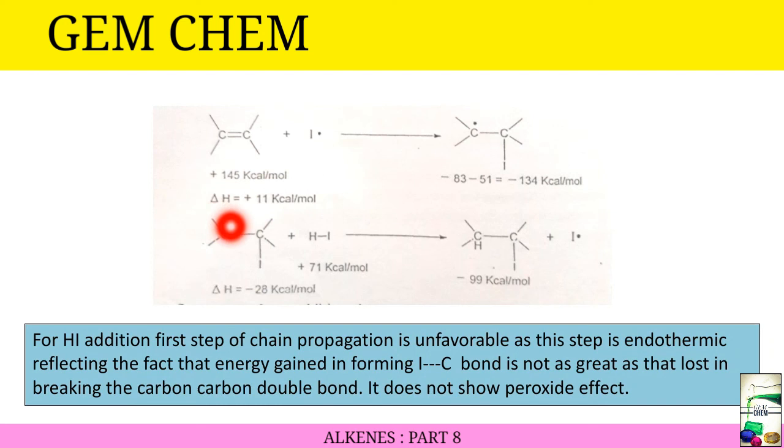Whereas the last case for HI, we see that the first step has a positive delta H, which means it is endothermic. Thus it reflects that the energy gained in forming the I-C bond is not as great as that lost in breaking the carbon-carbon double bond. And thus it does not show the peroxide effect.